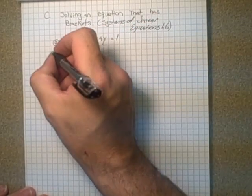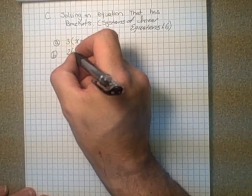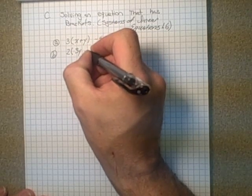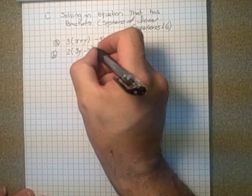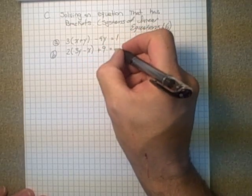And I have for my second set of equations, 2y, or 2, sorry, multiplied by 3y minus x plus 9 is equal to 19.